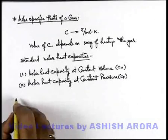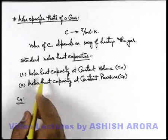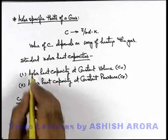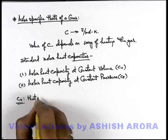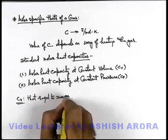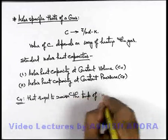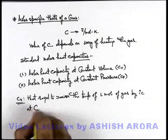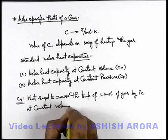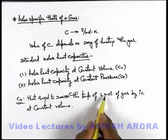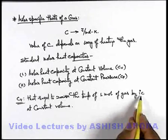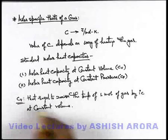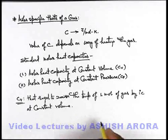Cv, or molar heat capacity at constant volume, can be defined — as the name implies — it is the heat required to raise the temperature of one mole of gas by one degree centigrade at constant volume. If at constant volume heat is supplied to a gas, and one mole of gas has its temperature raised by one degree centigrade, then the amount of heat required is called molar specific heat at constant volume.